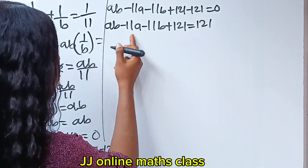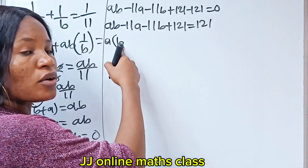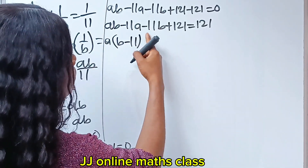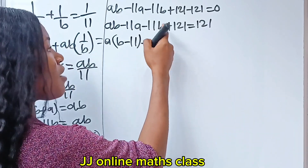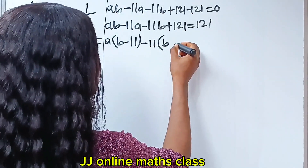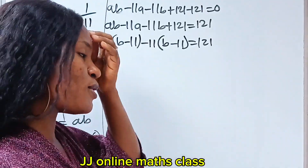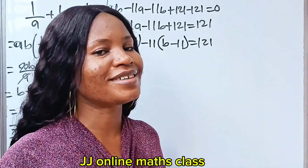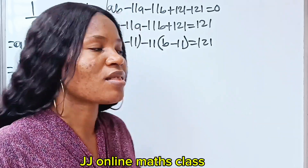Now let's factorize by grouping. So let's bring A out — A is common here. AB divided by A gives us B, and minus 11A divided by A gives us minus 11. Now, what do they have in common? Minus 11. Minus 11B divided by minus 11 gives us B, then plus 121 divided by minus 11 gives us minus 11. Please hit the subscribe button and notification bell if this is the first time you're coming across my channel.